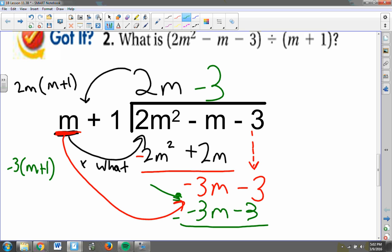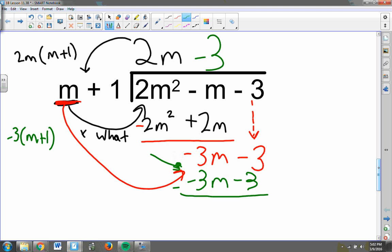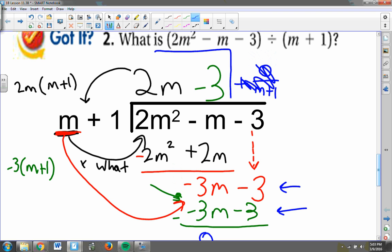But now when I subtract, what I want you to notice is these two are exactly the same. Negative 3 minus negative 3 is gone. Negative 3m minus negative 3m is another nothing. So my remainder is actually 0. You can put plus 0 over m plus 1, or you can just leave that off totally. My final answer here, I would love your final answer to be 2m minus 3. That's what I get when I divide 2m squared minus m minus 3 by m plus 1.